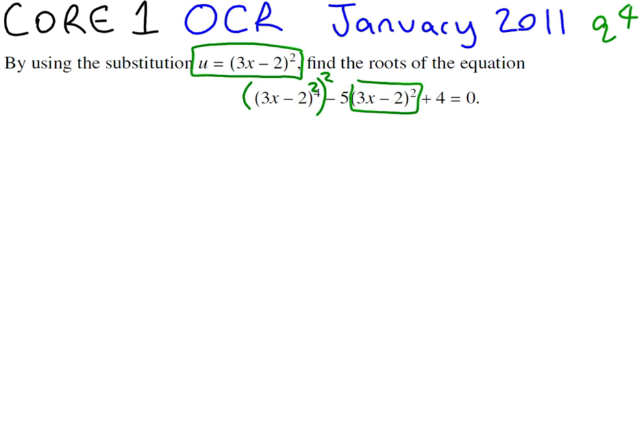So in this way we're going to change that to u, so it's going to be u squared minus 5u plus 4 equals 0.